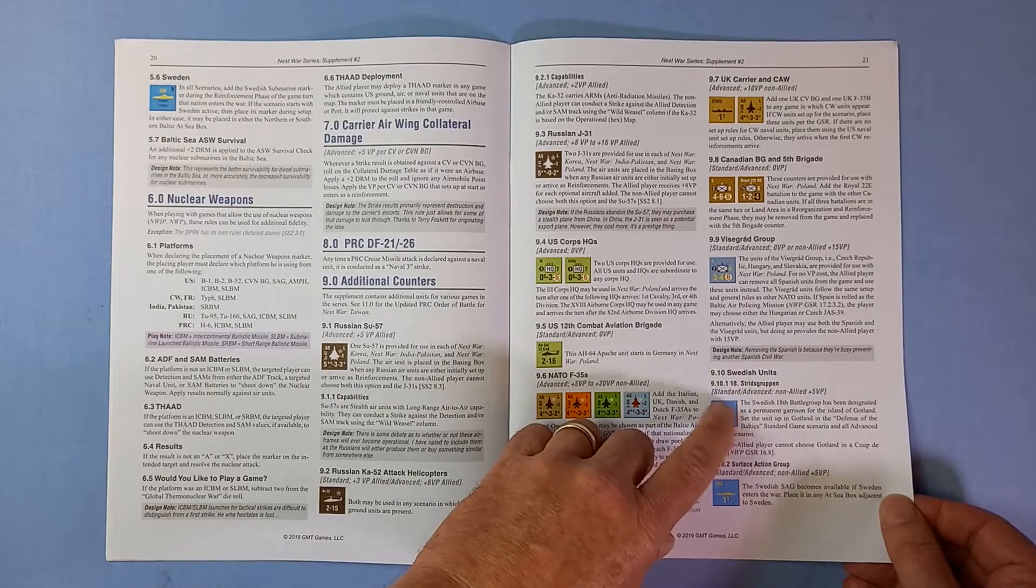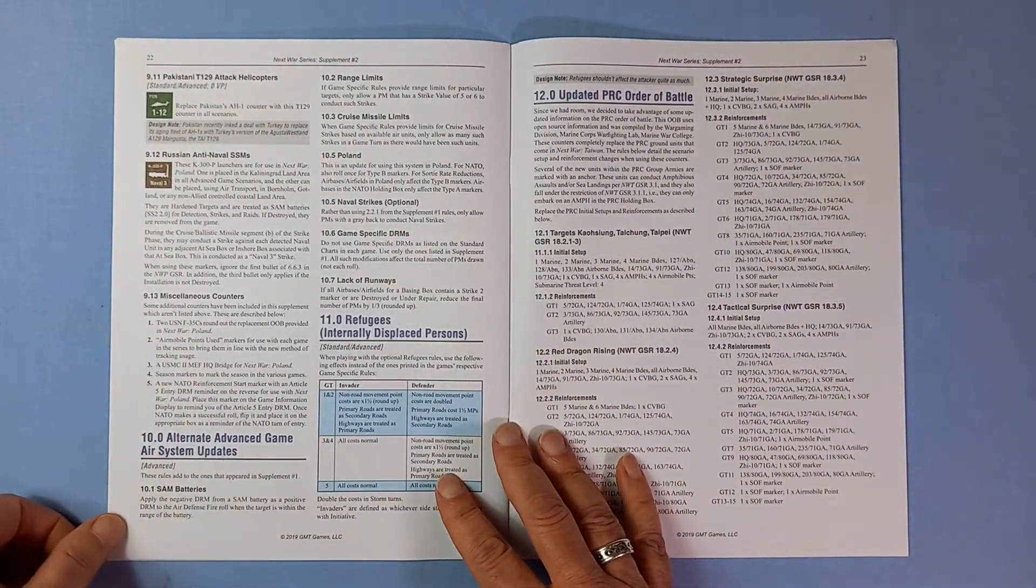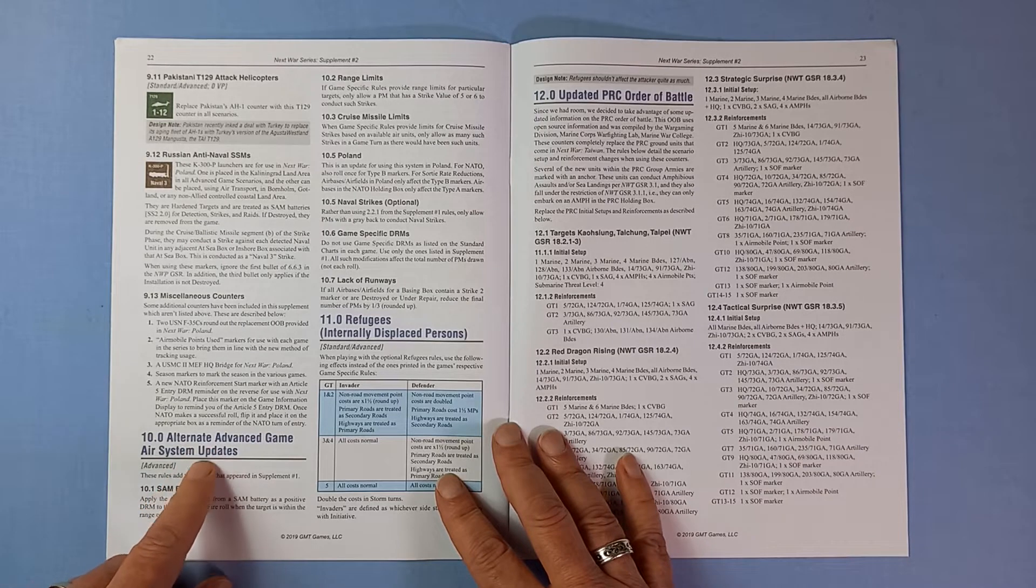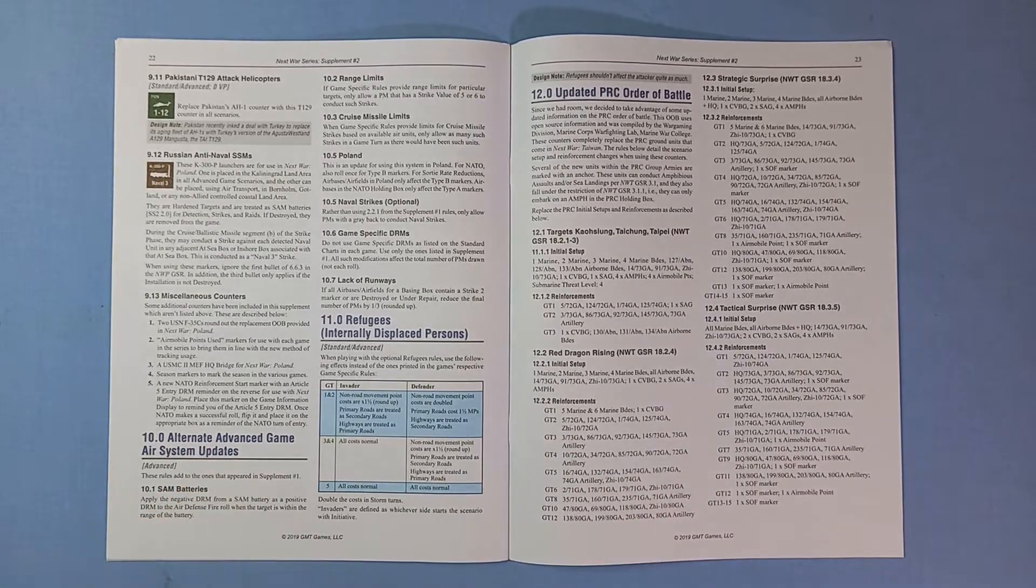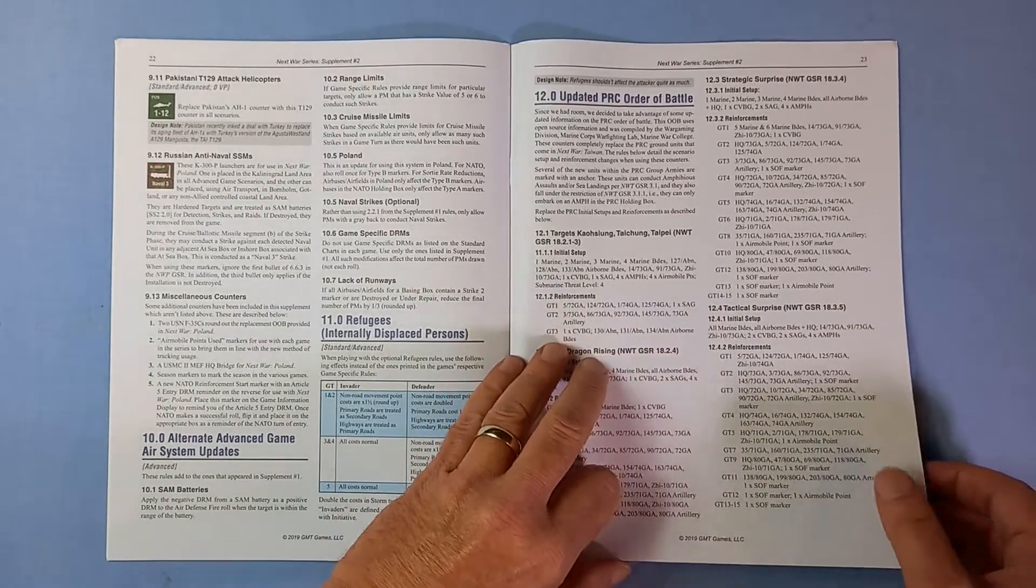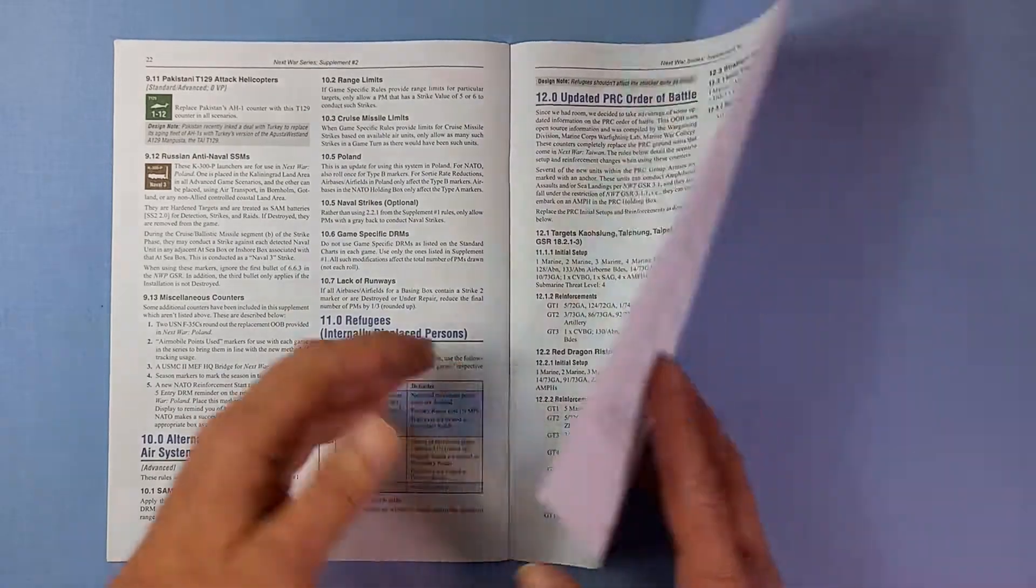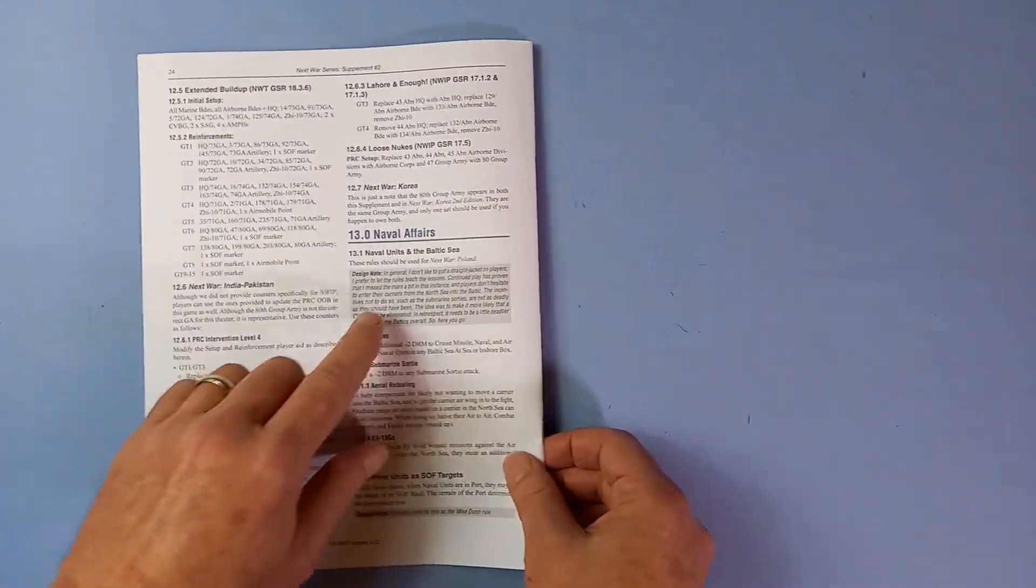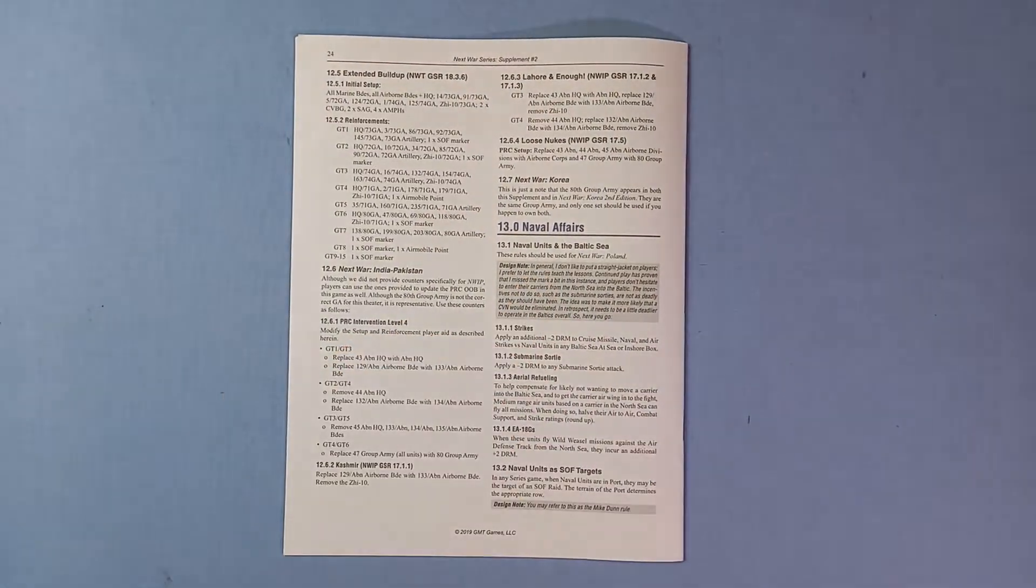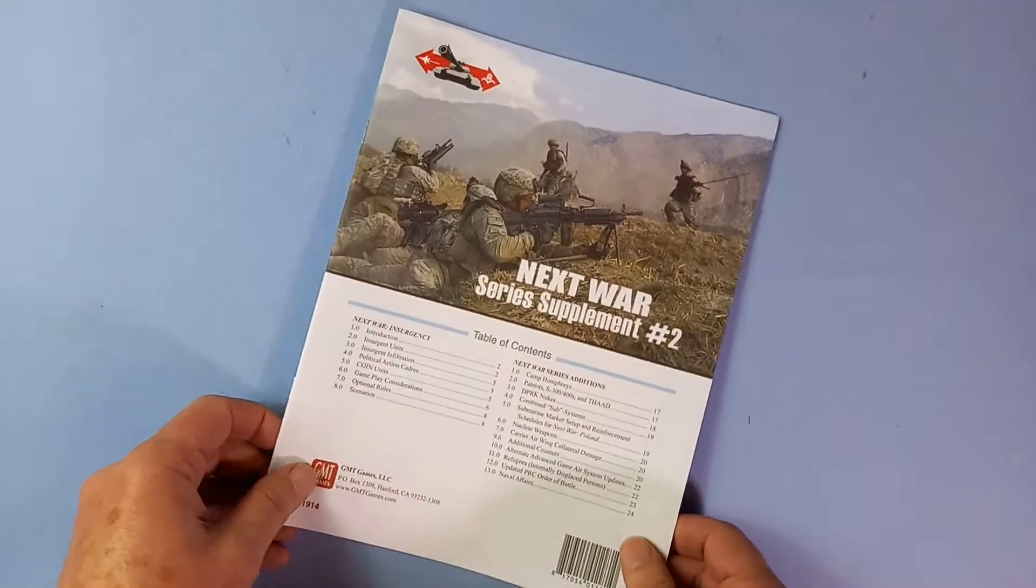Swedish units. Alternate advanced game air system updates. Refugees. Updated People's Republic of China order of battle. And some naval affairs. There we go. There's a lot in this.